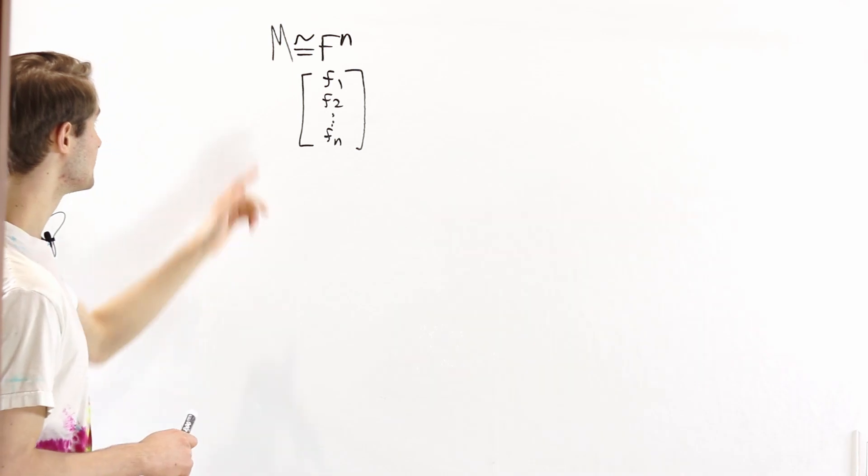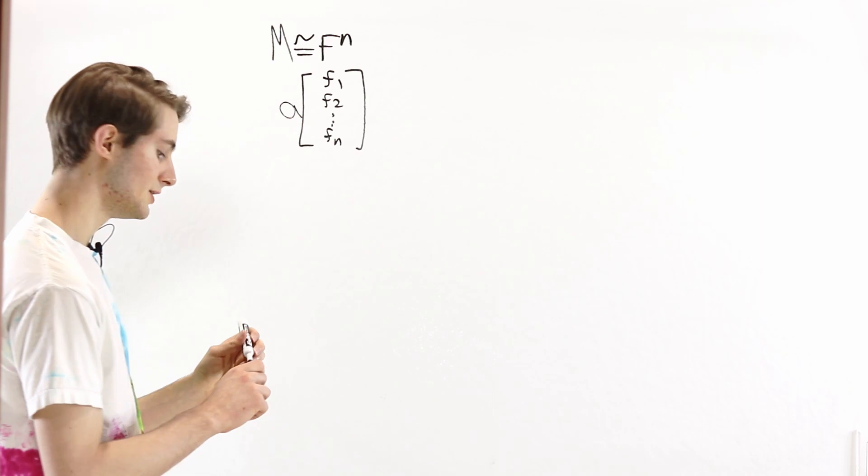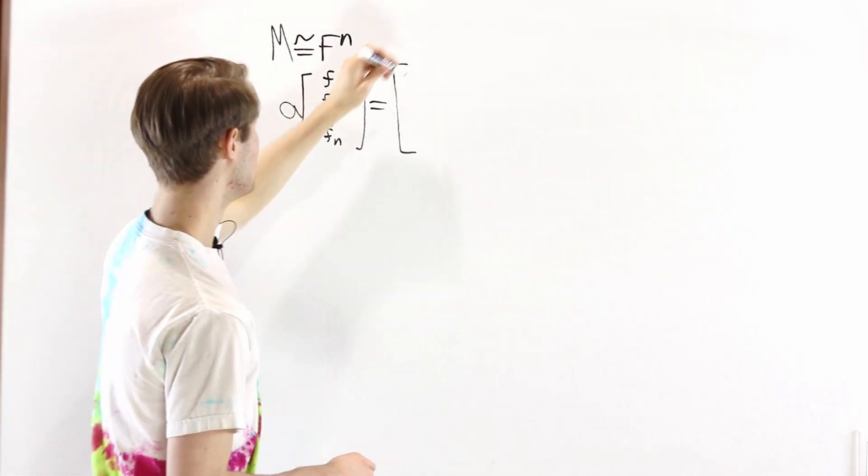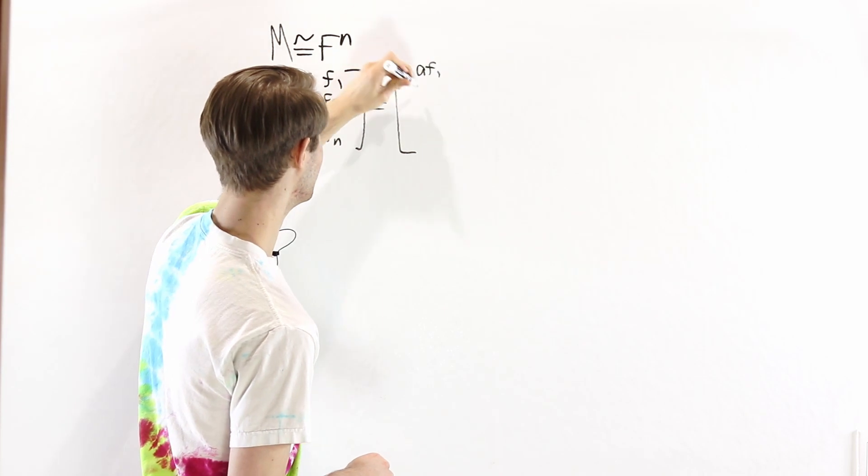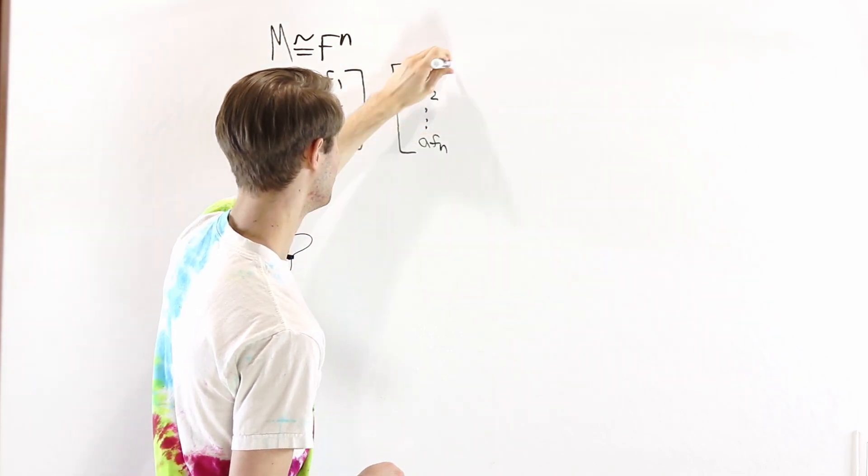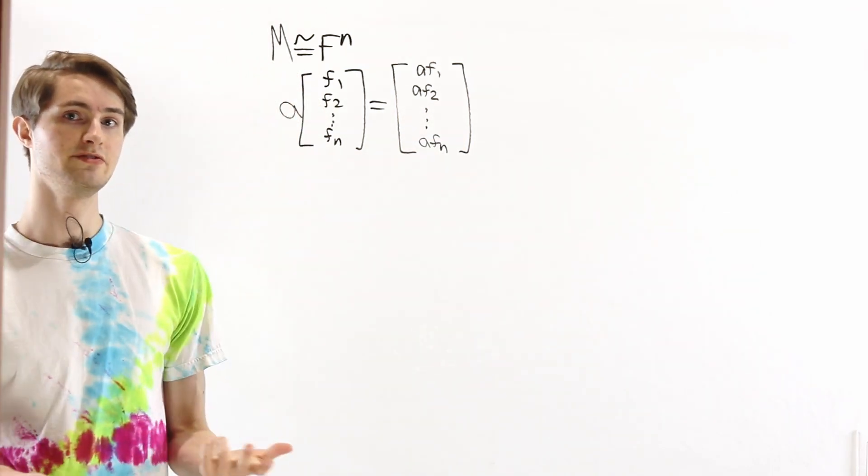If we want to look at the module structure of M, if we multiply this by some element in the field, all we have to do is just multiply each component of the vector. So we get af1, af2, and so on to afn. So this is what happens if M is a module over a field.